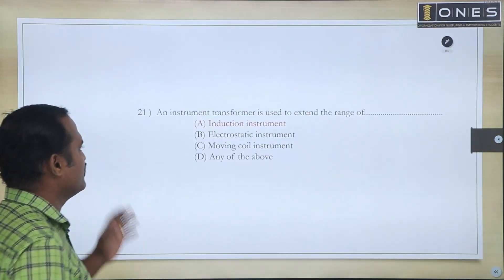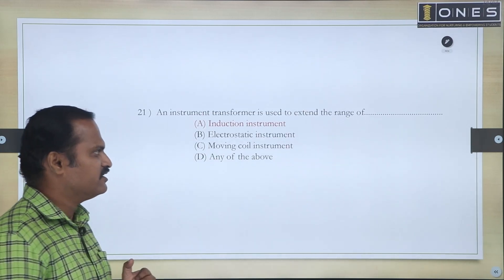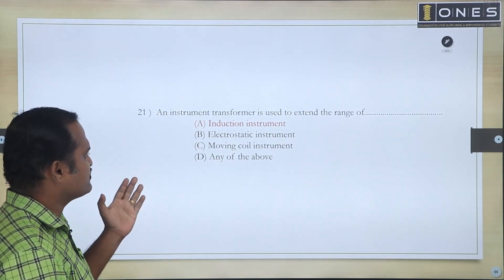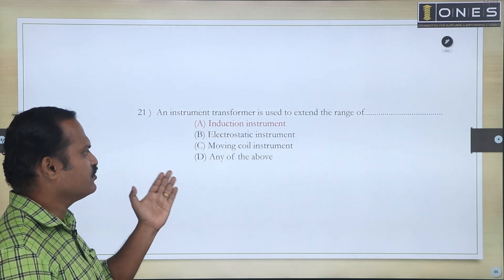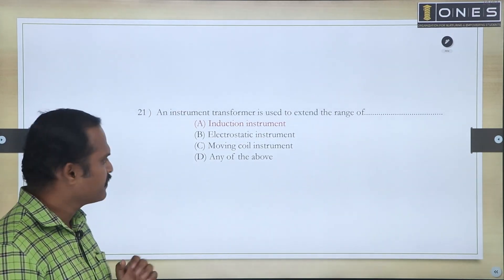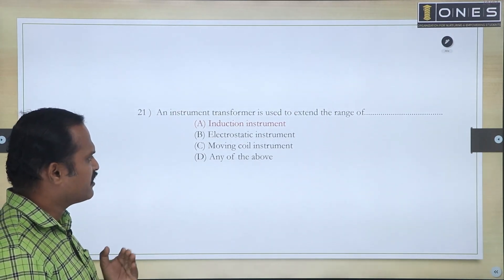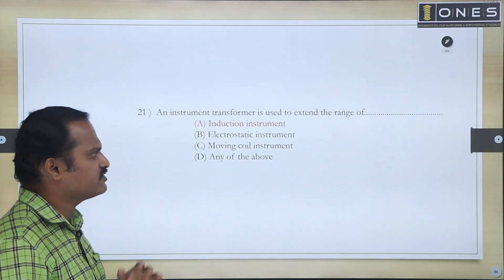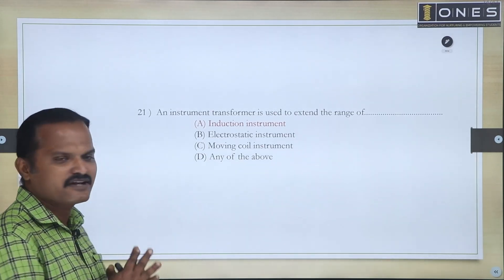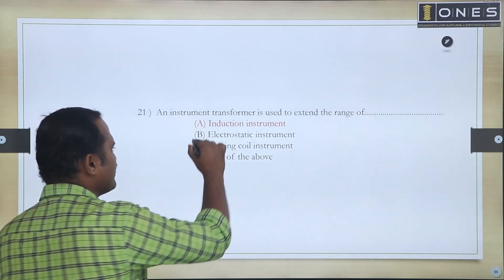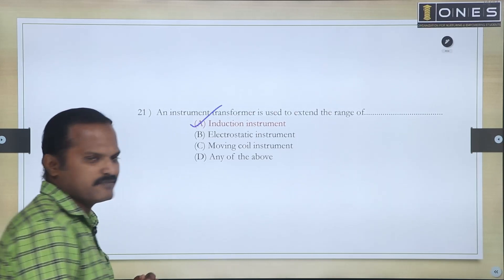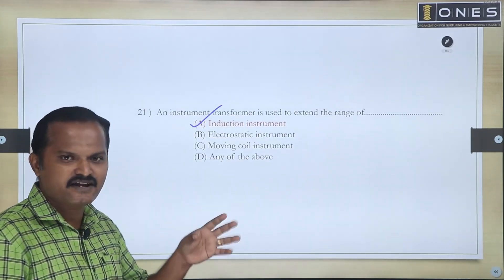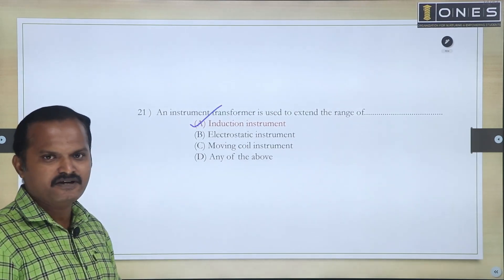First question: An instrument transformer is used to extend the range of which instrument? The choices are: electrostatic instrument, moving coil instrument, or induction type instrument. The answer is induction type instrument. An instrument transformer is used to extend the range of the induction type instrument.